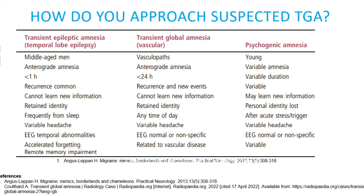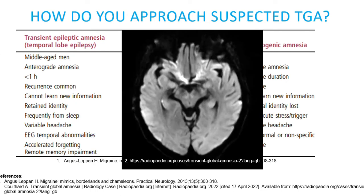We now know from prospective and retrospective studies that if MRI is correctly timed, it can detect small lesions of diffusion restriction in the hippocampus of patients with TGA. For example, this image on the right shows a small focus of signal hyperintensity within the right hippocampus — which you can more clearly see with the blue arrow pointing at it — in a patient with transient global amnesia. Therefore, neuroimaging with MRI may be useful to support the diagnosis, particularly in situations where it may be uncertain.